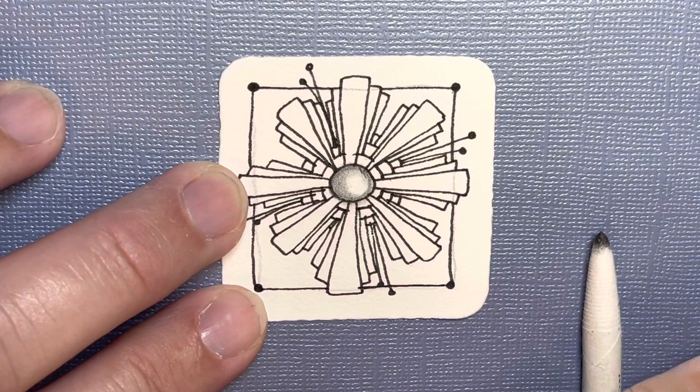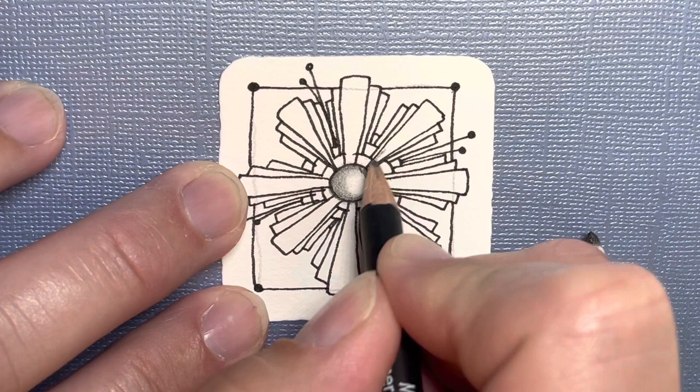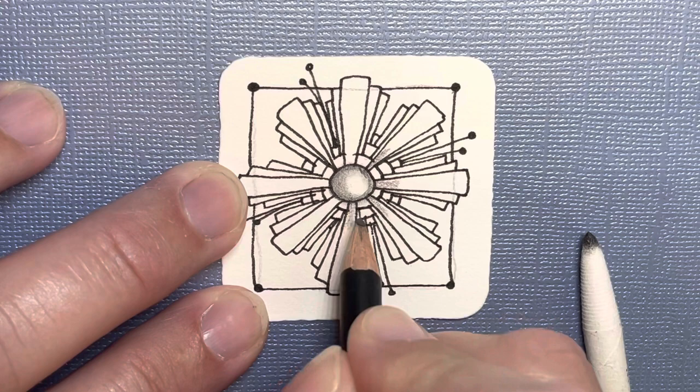Going back and darkening that edge. Okay. And then in each of these large spokes, I'm just going to put a little bit of graphite coming off from that middle area.